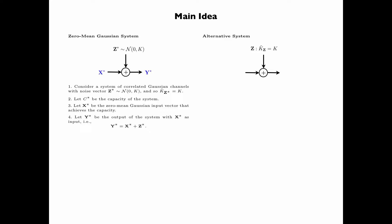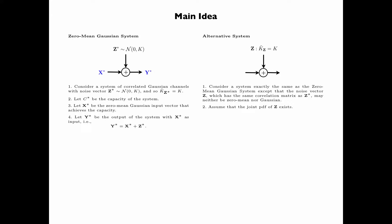We now consider another system, which we call the alternative system. This system is exactly the same as the zero mean Gaussian system, except that the noise vector Z has the same correlation matrix as Z star, but may neither be zero mean nor Gaussian. Assume that the joint PDF of Z exists. Let C be the capacity of the system. And let Y be the output of the system with X star as input, where X star is the same X star as in the zero mean Gaussian system. That is, Y is equal to X star plus Z.